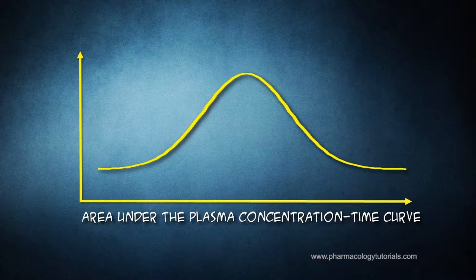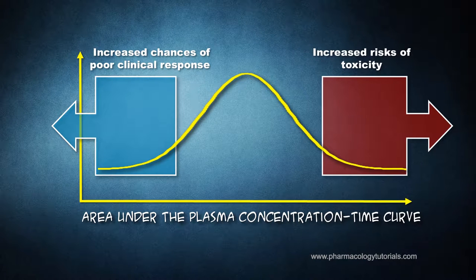When we do a frequency distribution of AUC values in the population after a standard dose of the drug, we get a normal distribution — but our eyes are once again drawn to the center. We must understand that in doing so, we lose sight of important things happening at the tails. In the left tail, you have individuals with increased chances of poor clinical response because their AUCs are so much lower than average. In the right tail, you have individuals with increased risks of toxicity because their concentrations are so much higher than average. The average responders in the center have no problems with the standard dose.